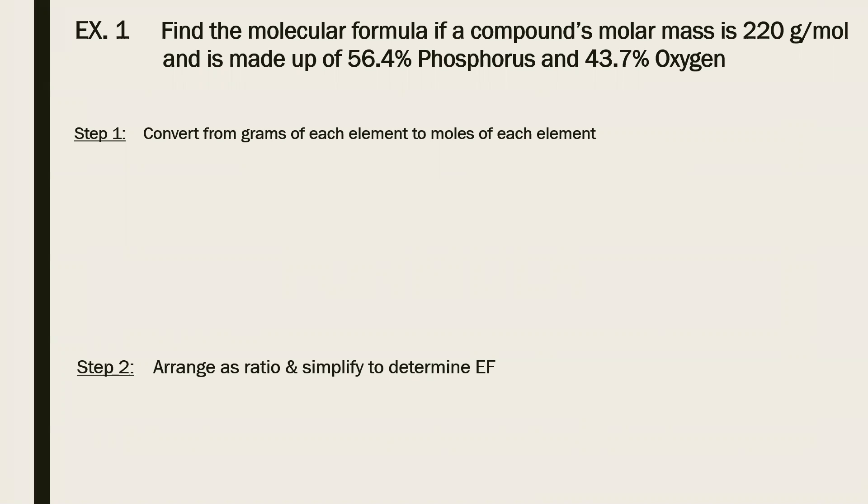So we said before that we can change the percent signs to grams. And then we go at that. So I have phosphorus changing it to moles. So I have to divide by the molar mass, the atomic mass.